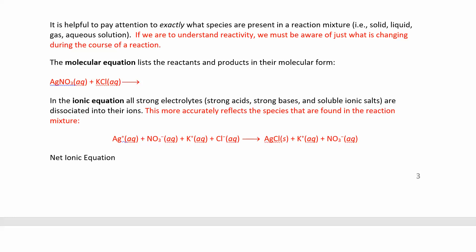Sometimes, a lot of times, when you're writing your chemical equations, it's really helpful to know exactly what kind of species you have present in the reaction mixture. Do you have a solid, a liquid, a gas, do you have aqueous ions? Knowing what is in there will help you understand how things are reacting over the course of the reaction.